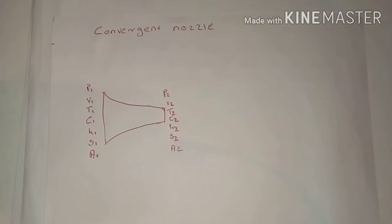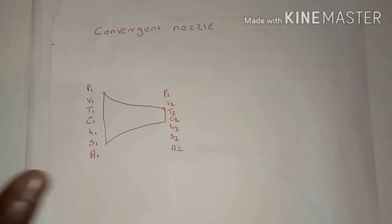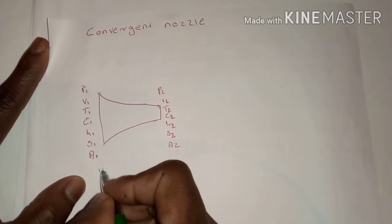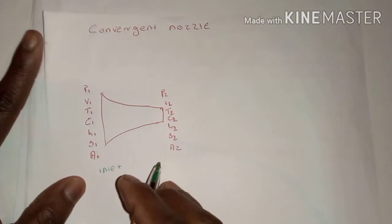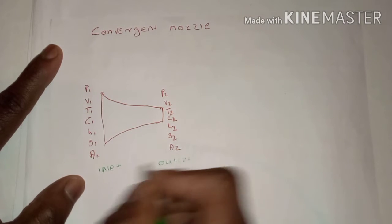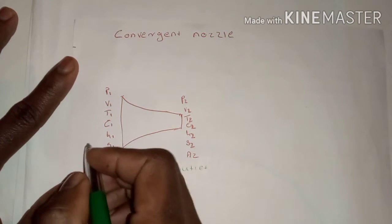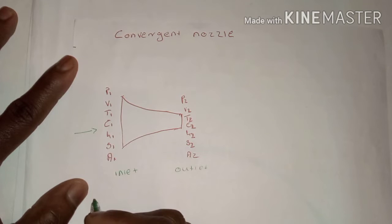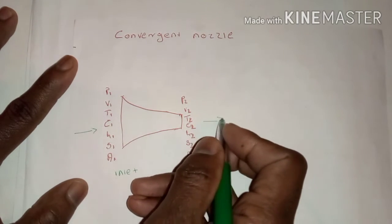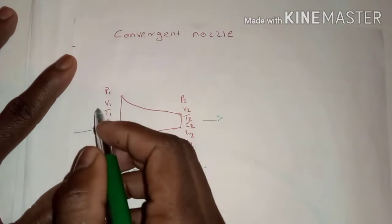Let's start with the convergent nozzle. This is a basic structure of a convergent nozzle. We have this part having our large diameter — this is the inlet. And then the one with the smaller diameter — this is the outlet. The fluid or substance that we want to increase in velocity from pressure is entering in this direction and leaving at this part of the nozzle. At the inlet, we are still having high pressure and low velocity.